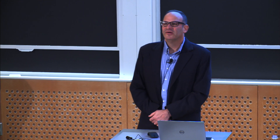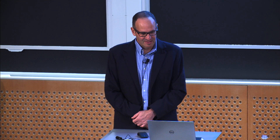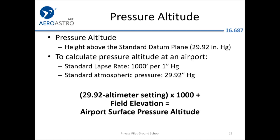Pressure altitude is your height above sea level with the altimeter set to 29.92. You take 29.92 minus the actual altimeter setting being published, multiply that by 1,000 — so a full inch of altimeter adjustment, like from 29.92 to 30.92, corresponds to a 1,000-foot difference in pressure altitude.